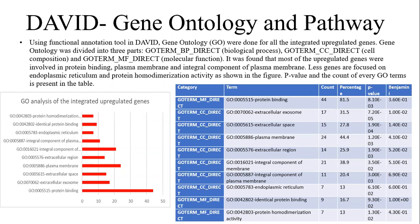DAVID, the Database for Annotation, Visualization, and Integrated Discovery, provides investigators with a comprehensive collection of functional annotation tools to help comprehend the biological significance of large gene lists. Using the functional annotation tool in DAVID, gene ontology (GO) analysis was done for the integrated upregulated genes. Gene ontology was divided into three parts: biological process, cellular component, and molecular function. It was found that most of the upregulated genes were involved in protein binding, plasma membrane, and integral component of plasma membrane, while fewer genes were focused on endoplasmic reticulum and protein homodimerization activity.